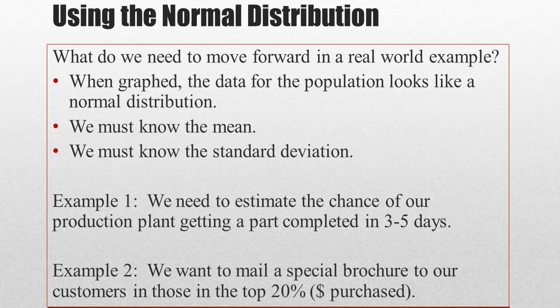So, we can use the normal distribution and some equations in Excel or some charts in the back of the book to take our, we want the top 20%, so we can change our percentage value into what dollar purchase should that equate to in order to be able to fall into our special brochure. Kind of gives you a little bit of an example and the high-level concepts. Continue on with the next video.